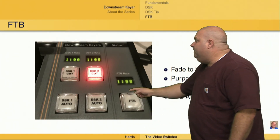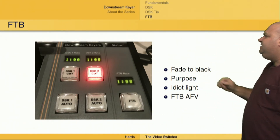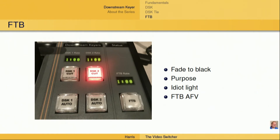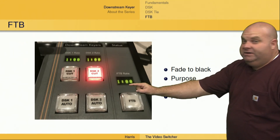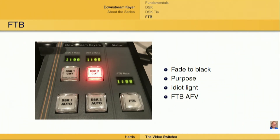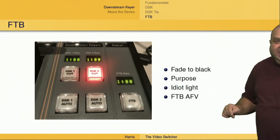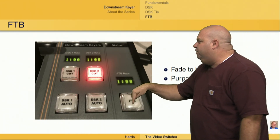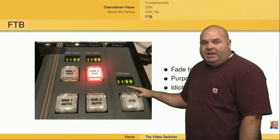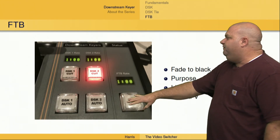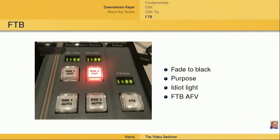As promised, we're going to talk about the FTB button, which is short for fade to black. The purpose of this button is to make it so that all keyers, all effects, and the background — meaning generally the cameras — are faded to black all at once. It's very difficult to do this in practice without an FTB button. It's going to happen at the rate of one second in this case, which is adjustable in the menu system. Once pushed, the fade to black will happen over the course of one second, and then a light will start to flash red about once per second, letting you know the switcher is currently in a black faded state.